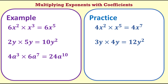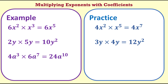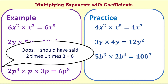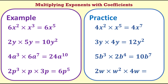4a to the 3 times 6a to the 7: we multiply the coefficients, 4 times 6 equals 24. The base is a, we add the indices 3 plus 7 equals 10, so we get 24a to the 10. Here's your one: 5b to the 3 times 2b to the 4. The answer is 10b to the 7 — 10 is 5 times 2, and 7 is 3 plus 4. 2p to the 3 times p times 3p: we multiply the coefficients 2 times 3 equals 6, and add up the number of p's multiplied — 3 plus 1 plus 1 equals 5. Your turn: 2w times w to the 2 times 4w equals 8w to the 4.